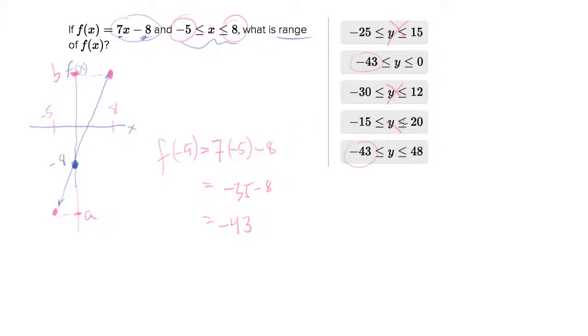If we plug in f of 8, we'll be looking for 7 times 8 minus 8. 7 times 8 is 56, minus 8 is 48.